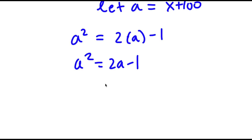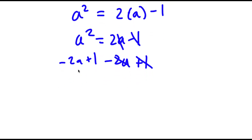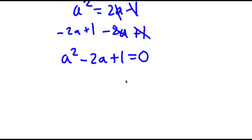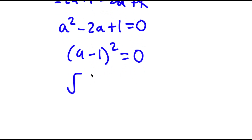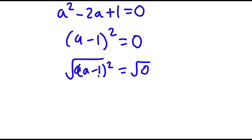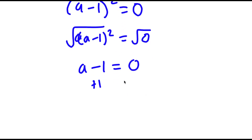I'm going to subtract 2a and add 1 on both sides. These terms cancel out, leaving a squared minus 2a plus 1 equals 0. Now a squared minus 2a plus 1 is the same as a minus 1, squared, equals 0. Taking the square root on both sides gives a minus 1 equals 0, so a equals 1.